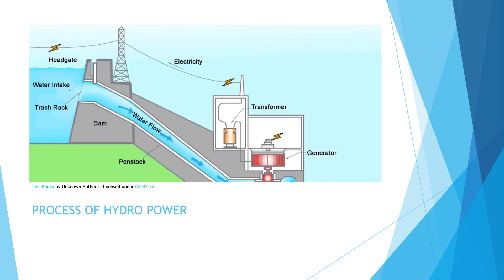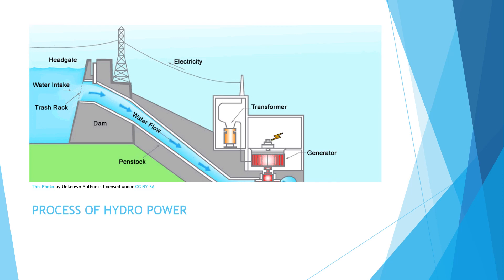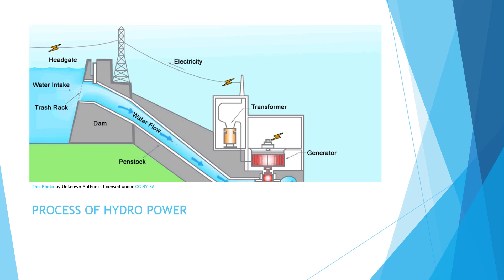This picture shows the process of producing hydropower. We can see water flowing from a dam — the potential energy of water stored in the dam converts to kinetic energy as it flows, rotating the turbine and shaft. Therefore the generator produces electricity, which is stored in the transformer and then passed through wires.